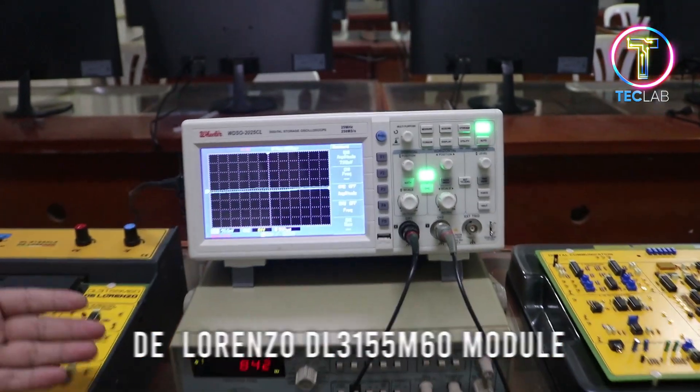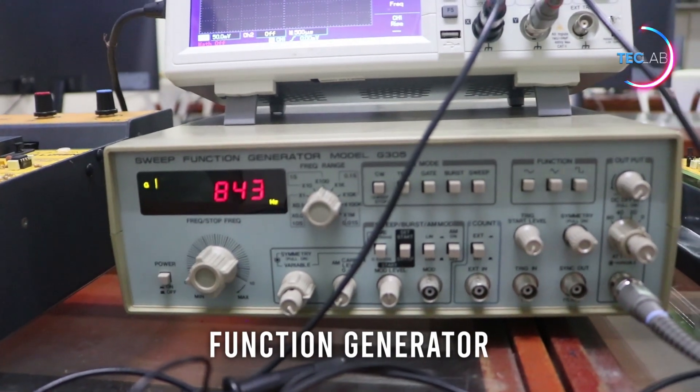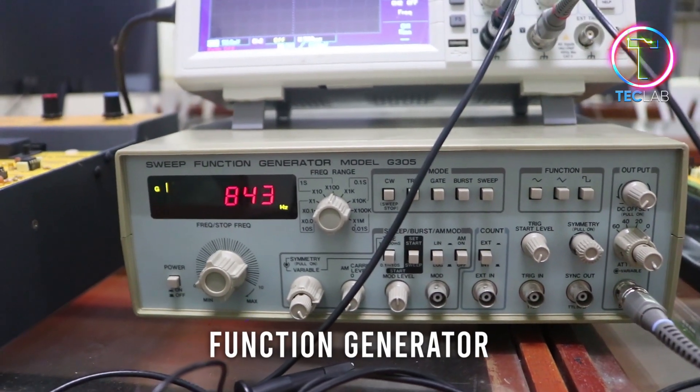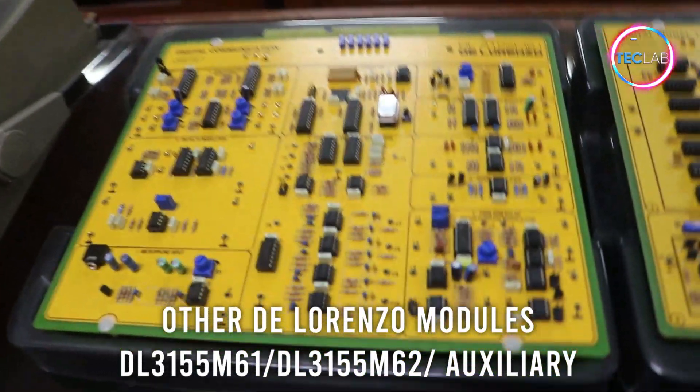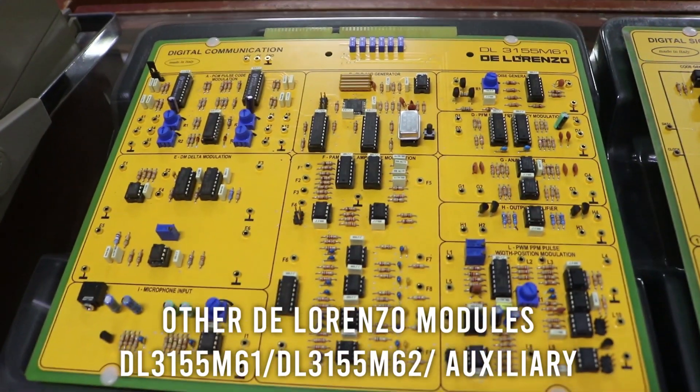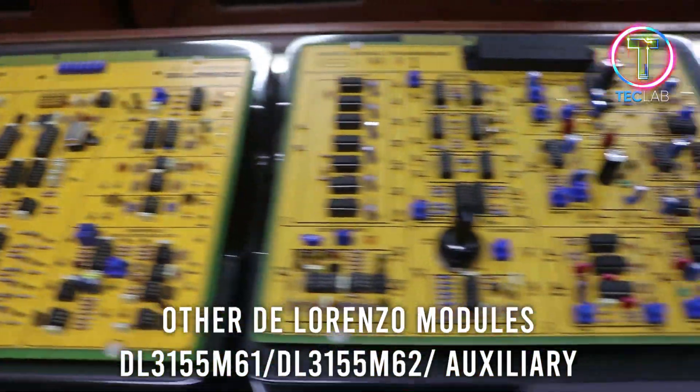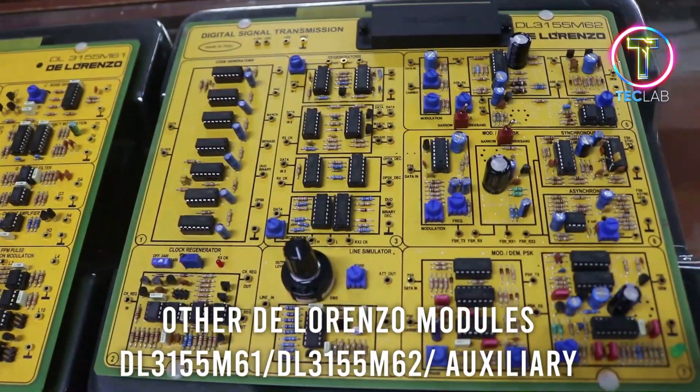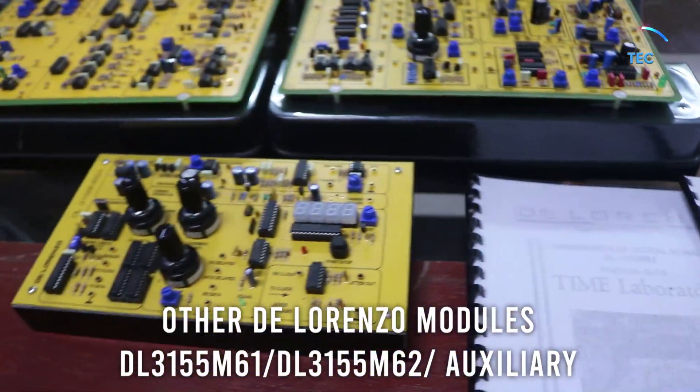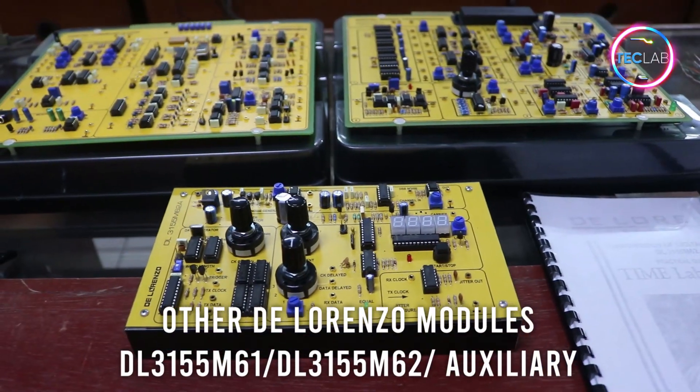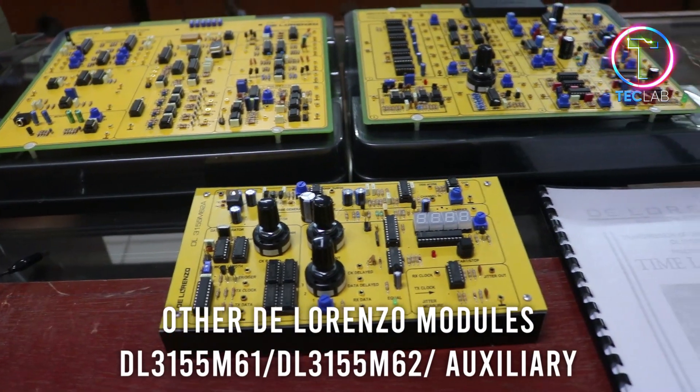We have here the function generator that is responsible for producing different signals for signal processing. And we have these other modules from DeLorenzo: the digital communication modules or the D155M61, the digital signal transmission modules or the DL3155M62, and lastly the auxiliary modules that support laboratories in communication system.